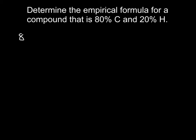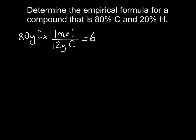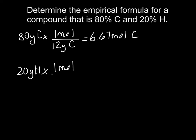If I have 80 grams of carbon, to find the number of moles I divide by the atomic mass of carbon, which is 12 grams. 80 divided by 12 gives me 6.67 moles of carbon. For 20 grams of hydrogen, I divide by the atomic mass of hydrogen, which is 1 gram. 20 divided by 1 is 20 moles of hydrogen.